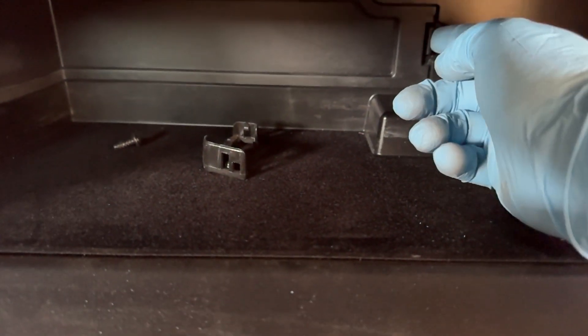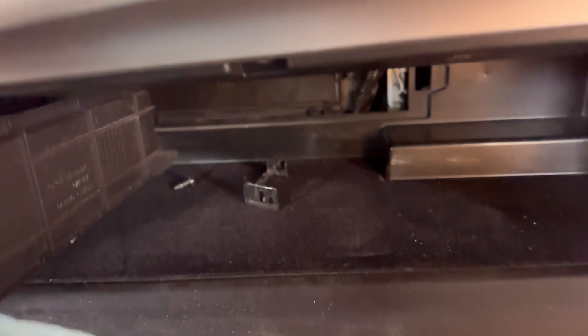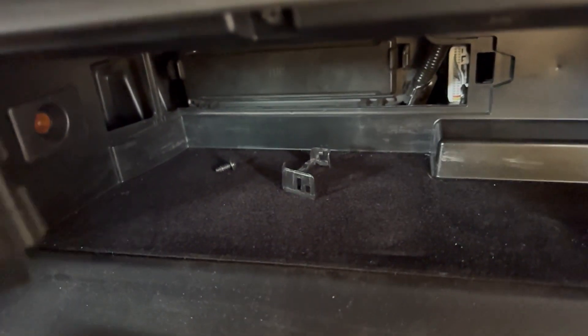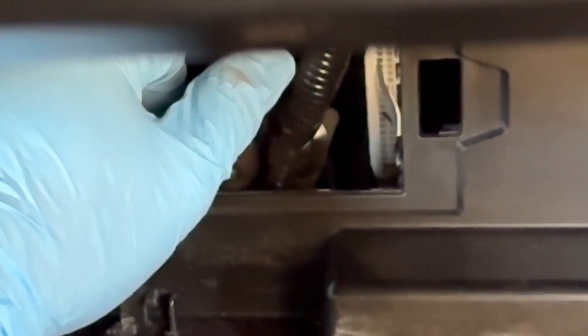If you open your glove compartment, you'll see there's a panel covering the air filter. You have to take that off first, and that reveals where the air filter is.